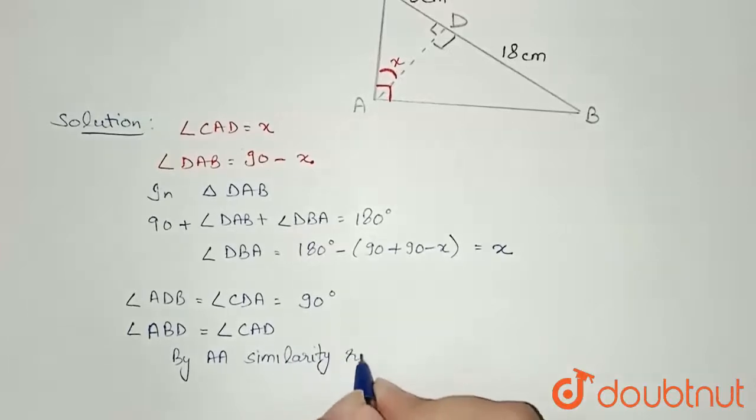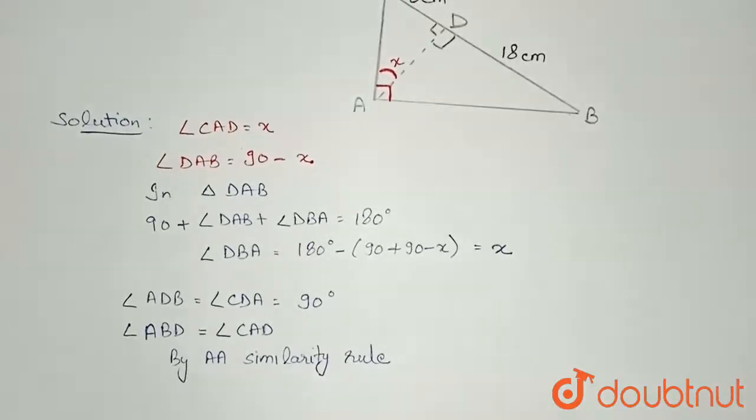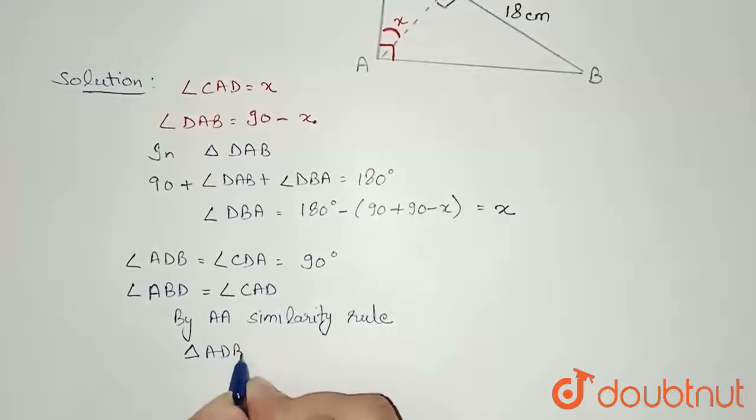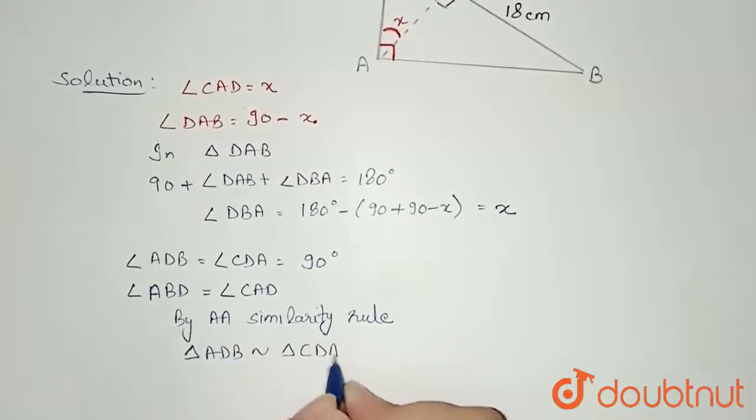Triangle ADB is similar to triangle CDA. So this is the result we got and we were asked to prove this. So hence proved.